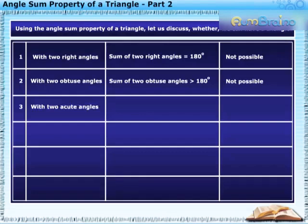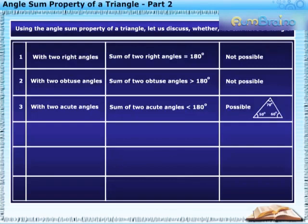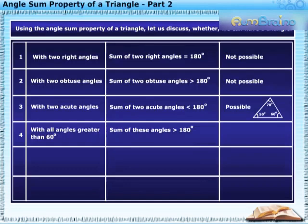With two acute angles, the sum of two acute angles is less than 180 degrees, hence it is possible to have such a triangle. With all three angles greater than 60 degrees, the sum of three angles will also be greater than 180 degrees, hence this case is also not possible.